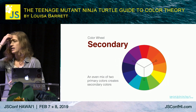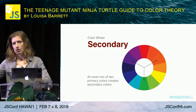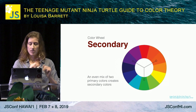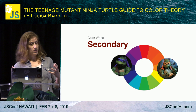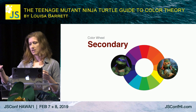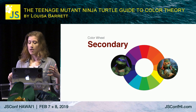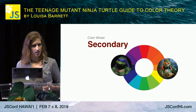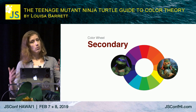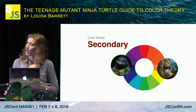Secondary colors are created by blending in equal amounts two primary colors — for example, red and yellow blended together gives you orange. With the turtles we have Donatello and Michelangelo. We still have that hot-cool dynamic, but they don't really butt heads the same way Raphael and Leonardo do because they're secondary colors. Their personalities are a little toned down, a little less intense, but still really bold and punchy with a lot of opinions.